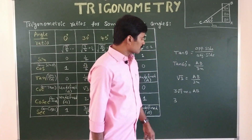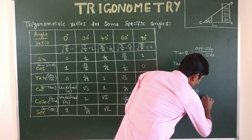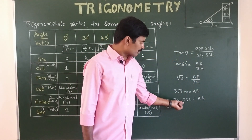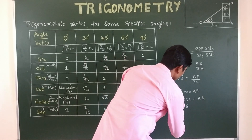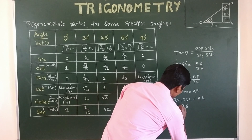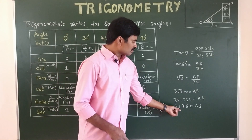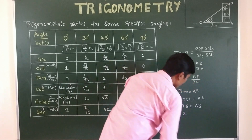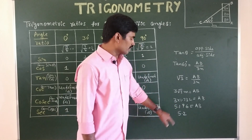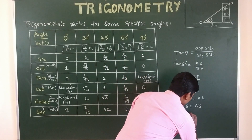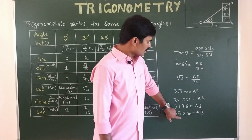The approximate value of √3 is 1.732. Multiplying by 3: 3 × 1.732 = 5.196. Rounding appropriately, the approximate height of the given building is 5.2 meters.